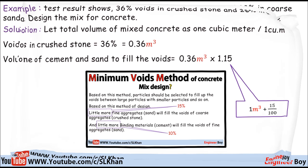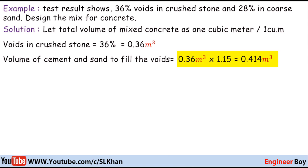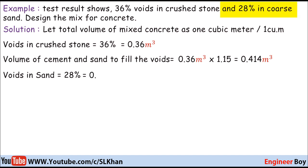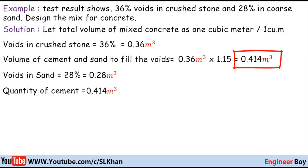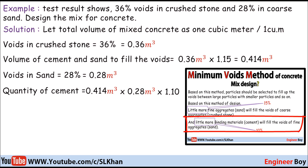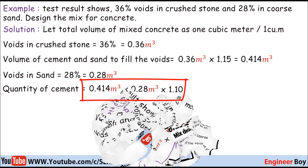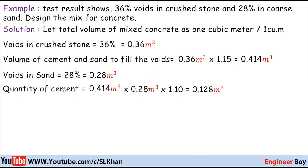So 0.36 times 1.15 equals 0.414 cubic meters, which is the total volume of cement and sand combined. Also, from the example, the voids in sand are 28%, or 0.28 cubic meters. We can now calculate the quantity of cement: the volume of cement equals 0.414 cubic meters times 0.28 times 1.10 — because a little more binding material fills the voids of fine aggregates — giving 0.128 cubic meters of cement.